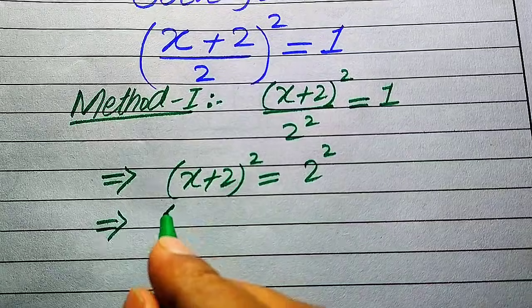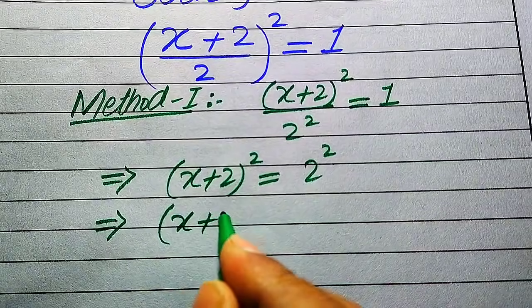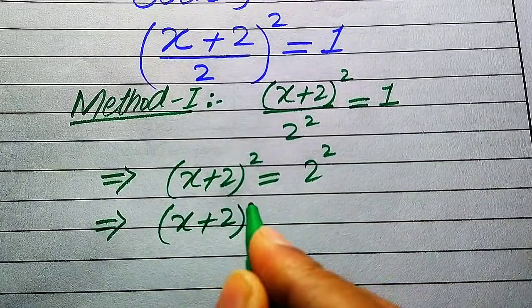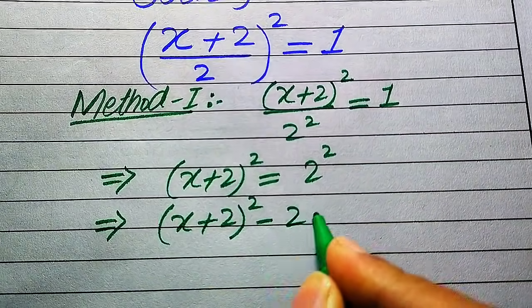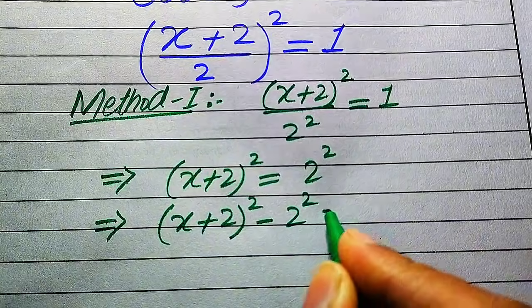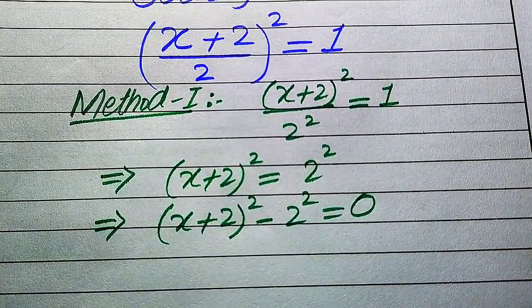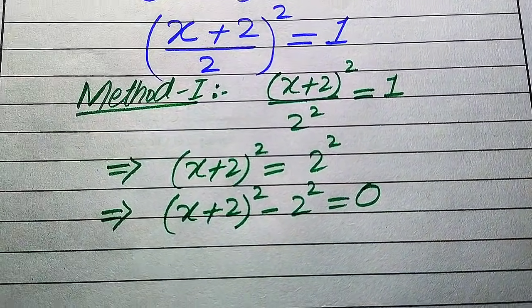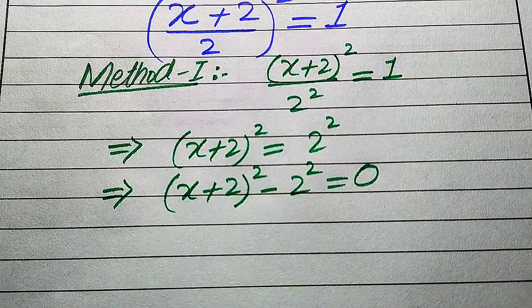Now we move 2² from the right hand side to the left hand side, and it becomes (x + 2)² minus 2², and this whole equation equals 0.